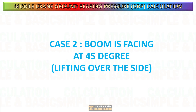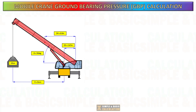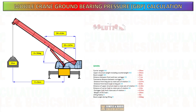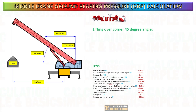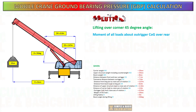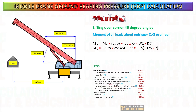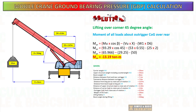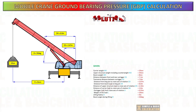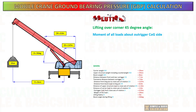Case number two calculation: boom is facing at 45 degrees, lifting over the side. Before getting the outrigger pressure when lifting over the side at 45 degrees, first calculate the moment of all loads about the outrigger center of gravity over the rear. Next, calculate the moment of all loads about the outrigger center of gravity over the side.